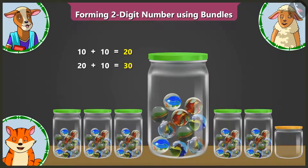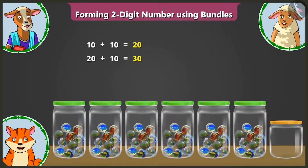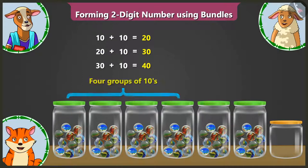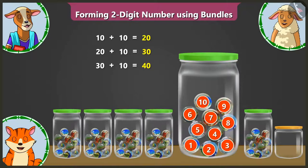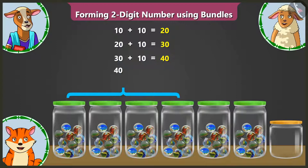Now, Lily, you count the marbles in the fourth jar. In the fourth jar, there are one, two, three, four, five, six, seven, eight, nine, and ten marbles. Absolutely right. So these are ten and ten, twenty; twenty and ten, thirty; thirty and ten, forty — four groups of tens. This fifth jar also has ten marbles, making it fifty — five groups of tens.